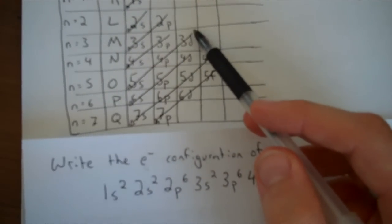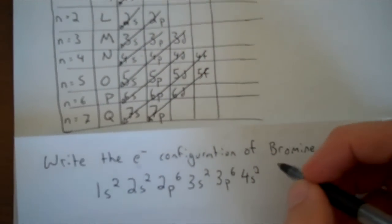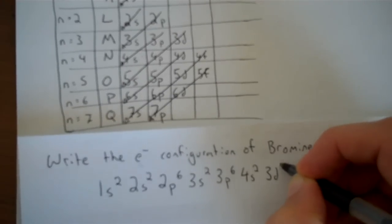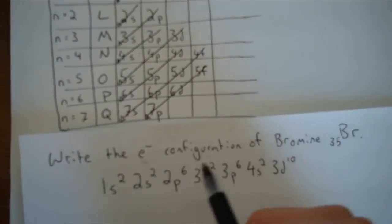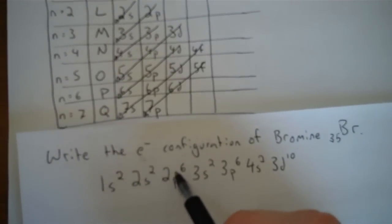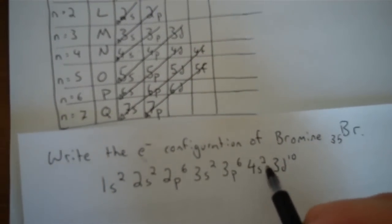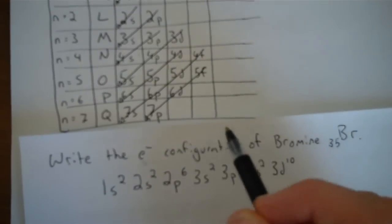It ends, go to the next line, it's 3D. A D subshell can hold 10, so I'll put 10 in there. Now I need to add up my electrons. Remember I have 35 total. Here I have 2, 4, 10, 12, 18, 20, 30, so I still have 5 to fill.